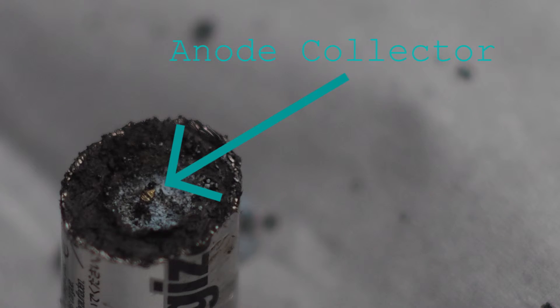The anode collector collects the electrons from the negative side of the battery and allows them to pass through whatever device the battery is powering.